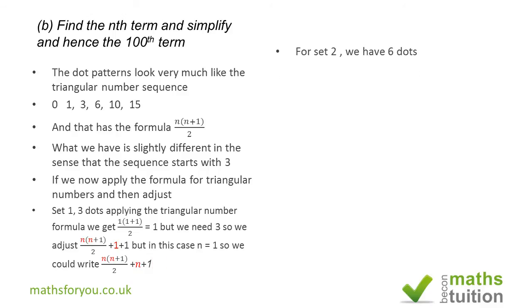Now for the second term, we know we've got six dots. If we use the formula n(n+1)/2 + n + 1, we have 2 times (2+1) which is 6, divide 6 by 2 you get 3, 3 plus 2 is 5, 5 plus 1 is 6, so that works for the second term.